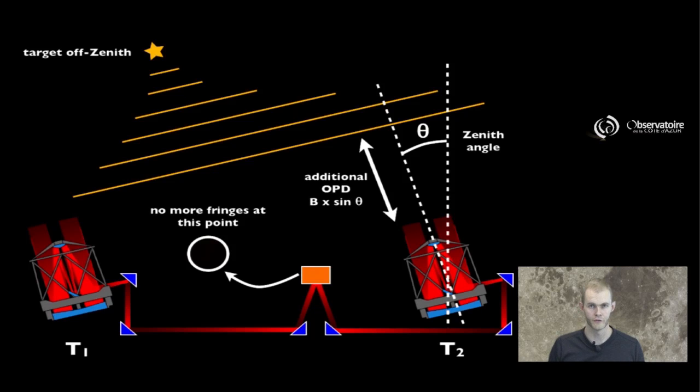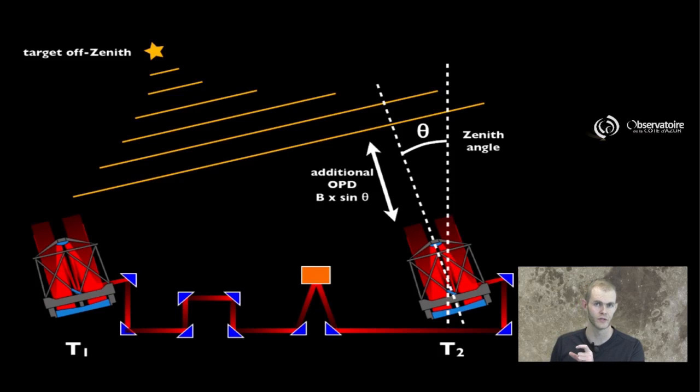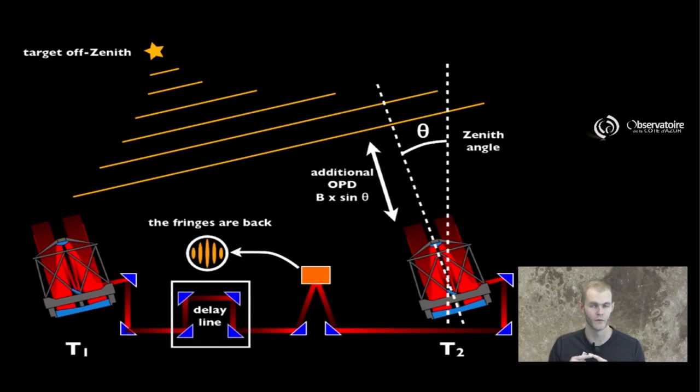How do you address this? You're going to have to change your architecture and introduce, on one of the arms of your interferometer, an extension that is going to delay the light by some amount that exactly matches the optical path difference that is introduced by the pointing. And in doing so, you're going to make sure that the light, again, reaches your focal point at the exact same time for the two interferometric arms. And in this case, you're going to recover your fringes.